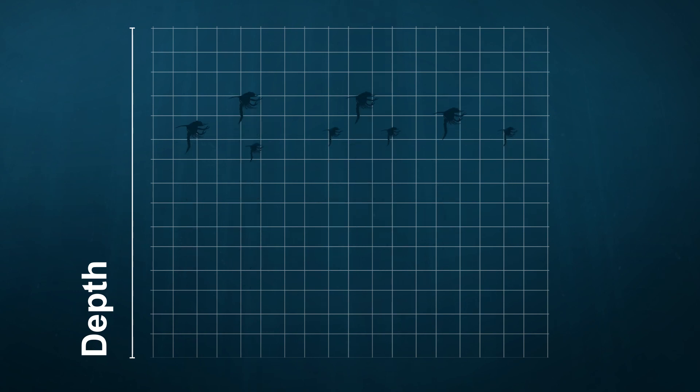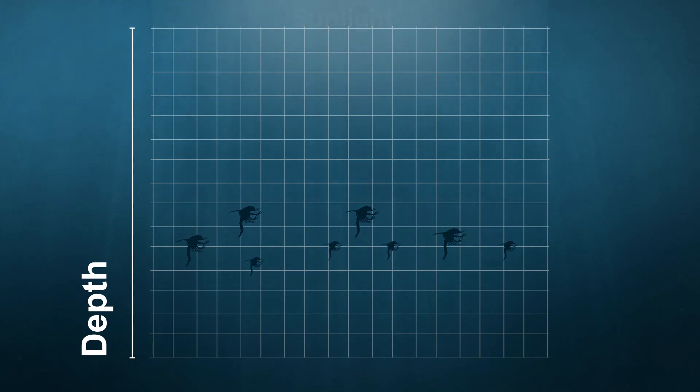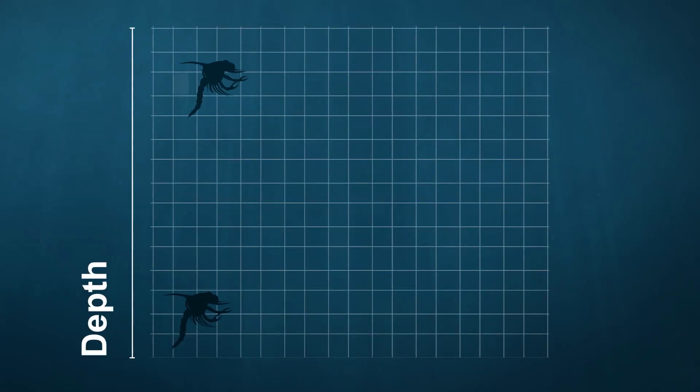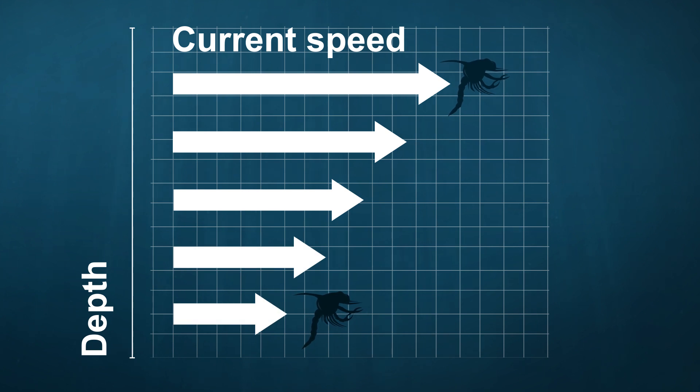This is really important because depth differences can cause them to be exposed to different current speeds. For example, if a larva were to be nearer the surface where the currents are faster when the tide was coming in, and then swim down and be nearer the bed where the currents are slower when the tide was going out, its net movement would be towards the coast — and this would be really beneficial if it was a species who as an adult likes to live on the rocky shore.